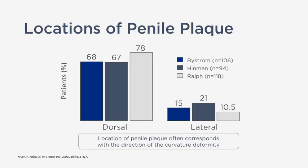Where do you find these scars? Roughly 70% to 80% of them are located on the top of the penile tissue, or the dorsum. Roughly 20% of patients will have a scar on the side of the penis. That's why most patients will curve upward — because the majority of the scar is on the top of the penis, so when erect, it curves in the upward direction.